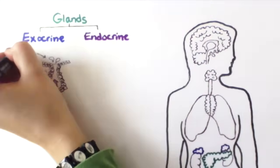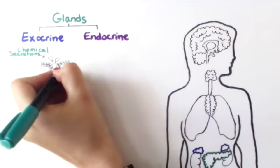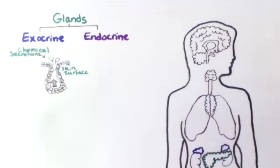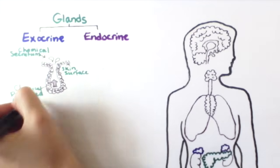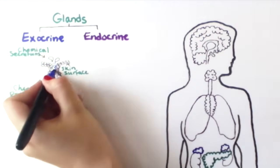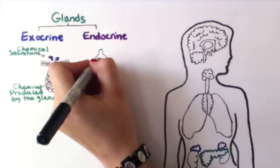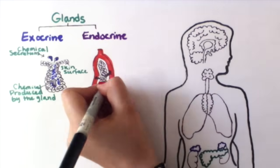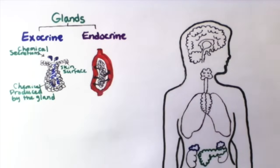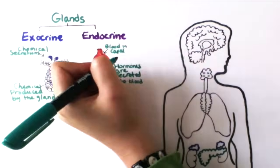There are two types of glands: exocrine glands and endocrine glands. Exocrine glands have ducts that secrete chemicals such as saliva or sweat. On the other hand, endocrine glands are ductless and they secrete hormones directly into the bloodstream.